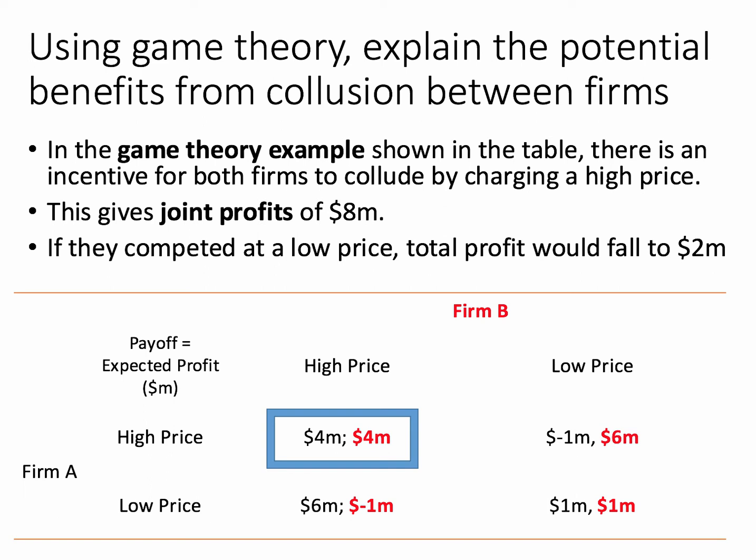In the game theory example shown in the table, there is an incentive for both firms to collude by charging a high price — that's the top left-hand bit of the table. If they both charge a high price through collusion, this gives a joint profit of eight million dollars.